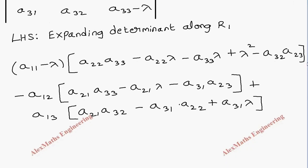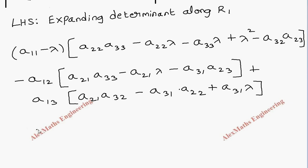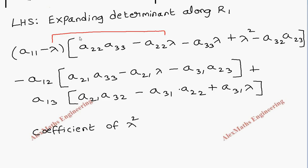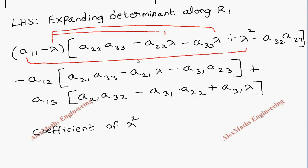From this determinant expansion, we are going to take the coefficient of lambda squared. When this lambda is multiplied with this lambda, and when a11 is multiplied with this lambda squared term, we get the lambda squared terms. Taking the coefficients: minus lambda times minus lambda gives positive a22, then minus lambda times the negative term gives positive a33, and a11 with lambda squared gives a11. So the coefficient of lambda squared from the left-hand side is a11 plus a22 plus a33. Let's keep this as equation 1.